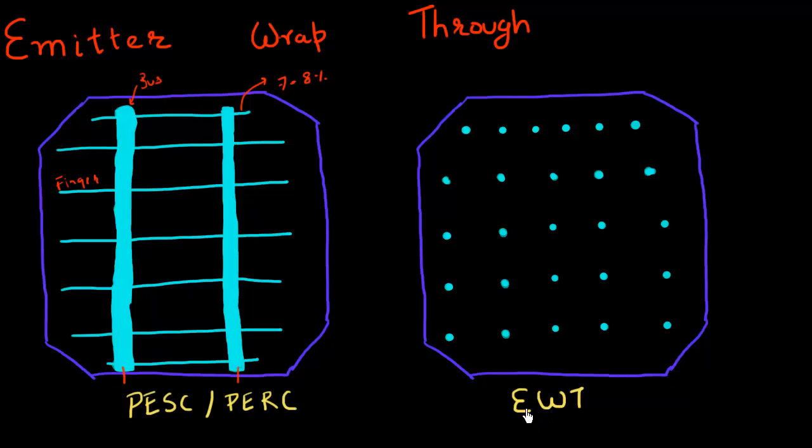As compared to the emitter wrap-through cell, if you look at the top view of this cell, what you'll see is only these series of holes. A very small one or two percent of the area would be occupied by these holes. So how does this work? How do these dots act as a contact?